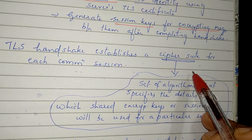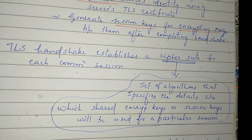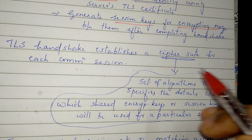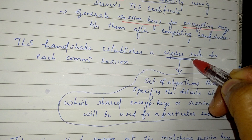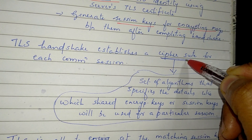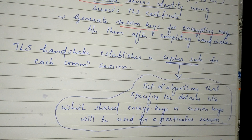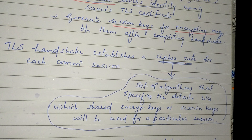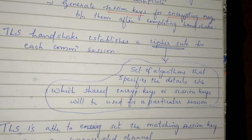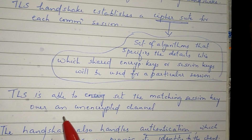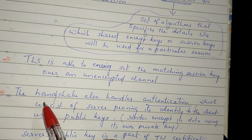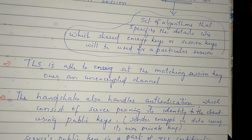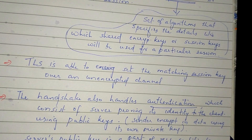During the handshake, the cipher suite is negotiated — specifying what set of algorithms and what types of keys are used. An unencrypted channel is used to create matching session keys. The handshake establishes a connection and handles authentication to ensure the correct server is communicating.